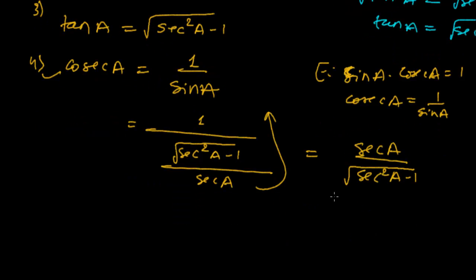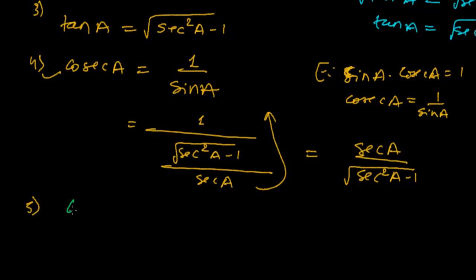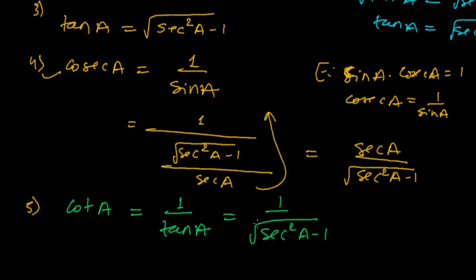And the fourth and the fifth one. The fifth one, let me do it another color, that is cot A. Cot A, we know it is the reciprocal of the tan A. So let me write this is tan A. And the value of tan A is, you know, sec square A minus 1. So I can easily write sec square A minus 1.